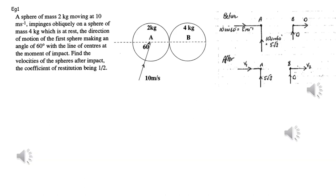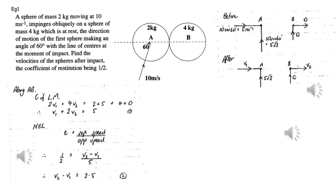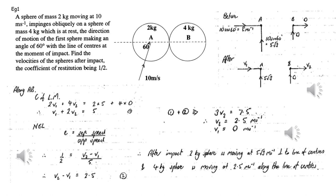It is highly recommended in these questions that we draw a diagram showing the velocities before impact parallel and perpendicular to the line of centres, and the velocities after impact parallel and perpendicular to the line of centres. Remember that perpendicular to the line of centres the velocity is unaltered. Parallel to the line of centres, we apply conservation of linear momentum and Newton's experimental law, giving two equations involving V1 and V2. Solving simultaneously, we can evaluate V1 and V2 and solve the problem.